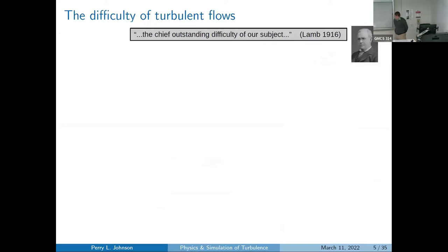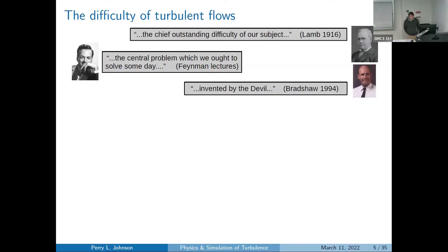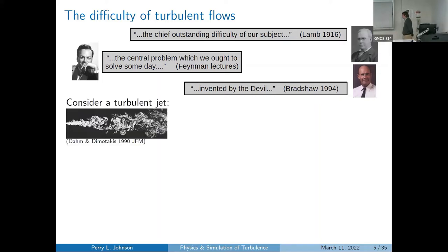What's so difficult about turbulent flows? Horace Lamb called turbulence "the chief outstanding difficulty" in fluid mechanics. Richard Feynman called it "the central problem which we ought to solve someday." Peter Bradshaw postulated that turbulence was invented by the devil to torment engineers and scientists. Here is a fluorescent image of a turbulent jet showing coherent motions.